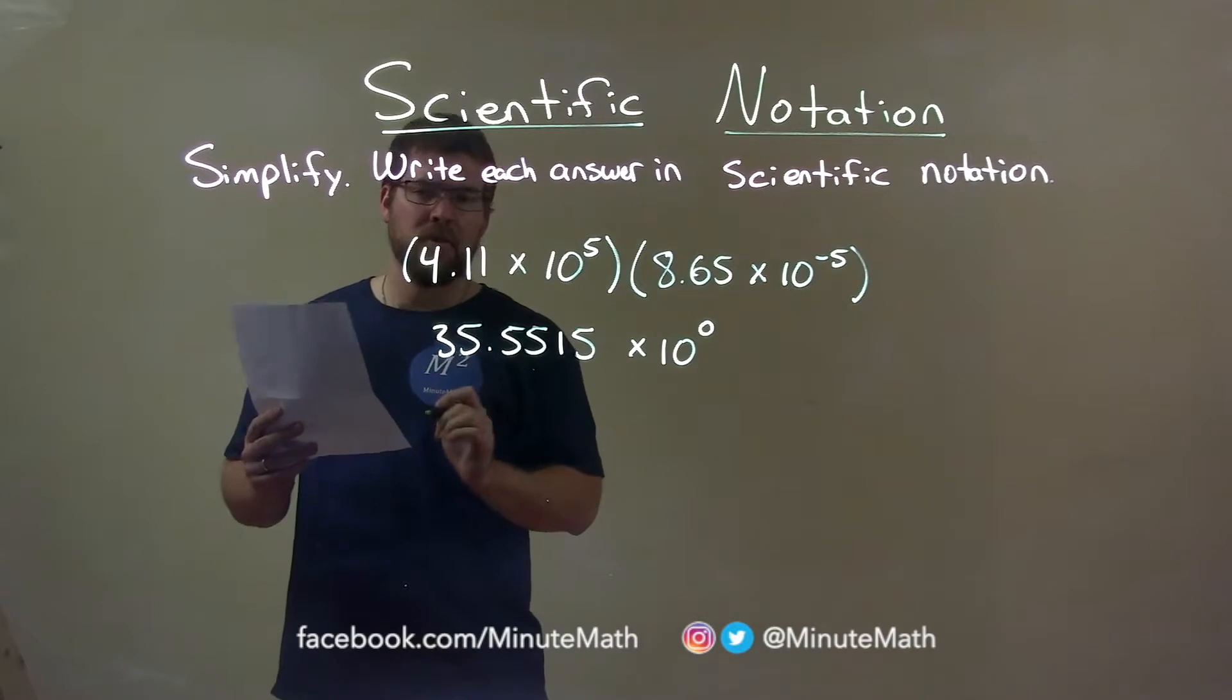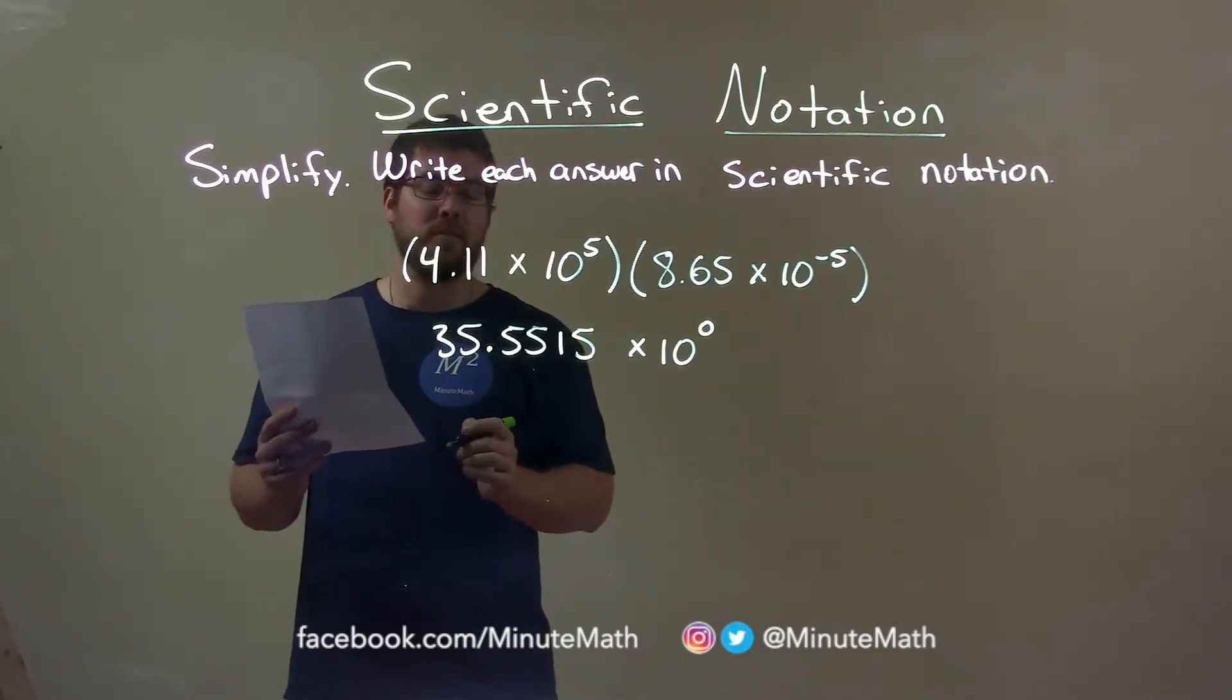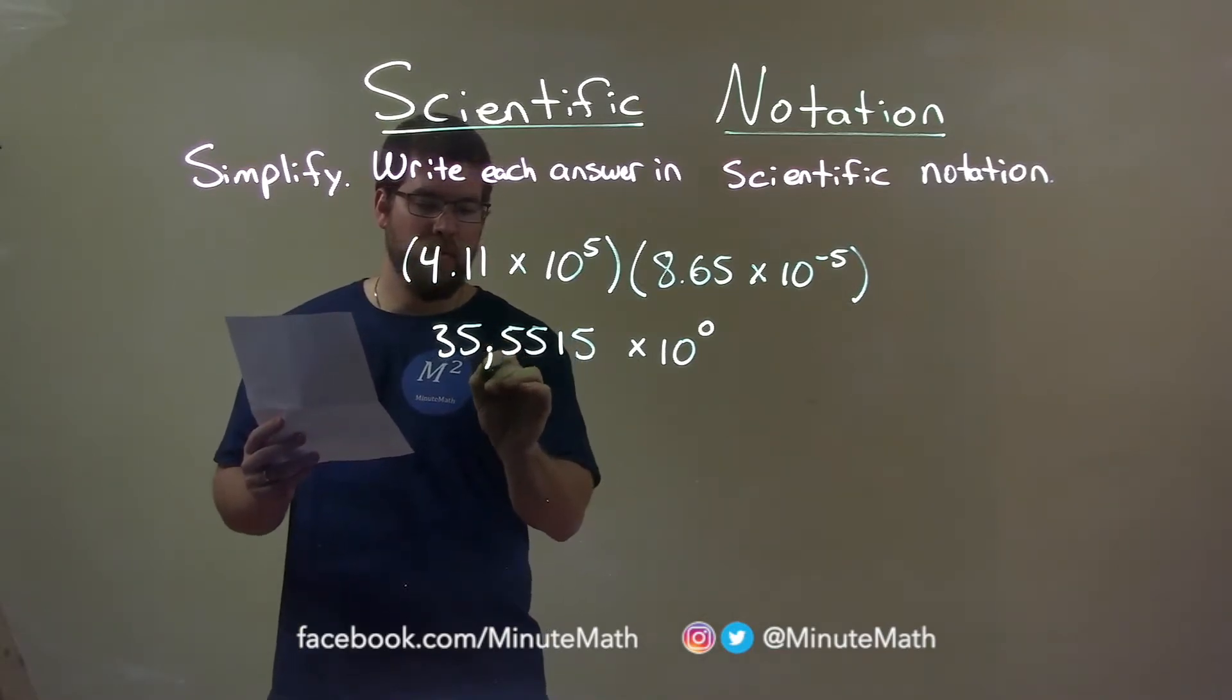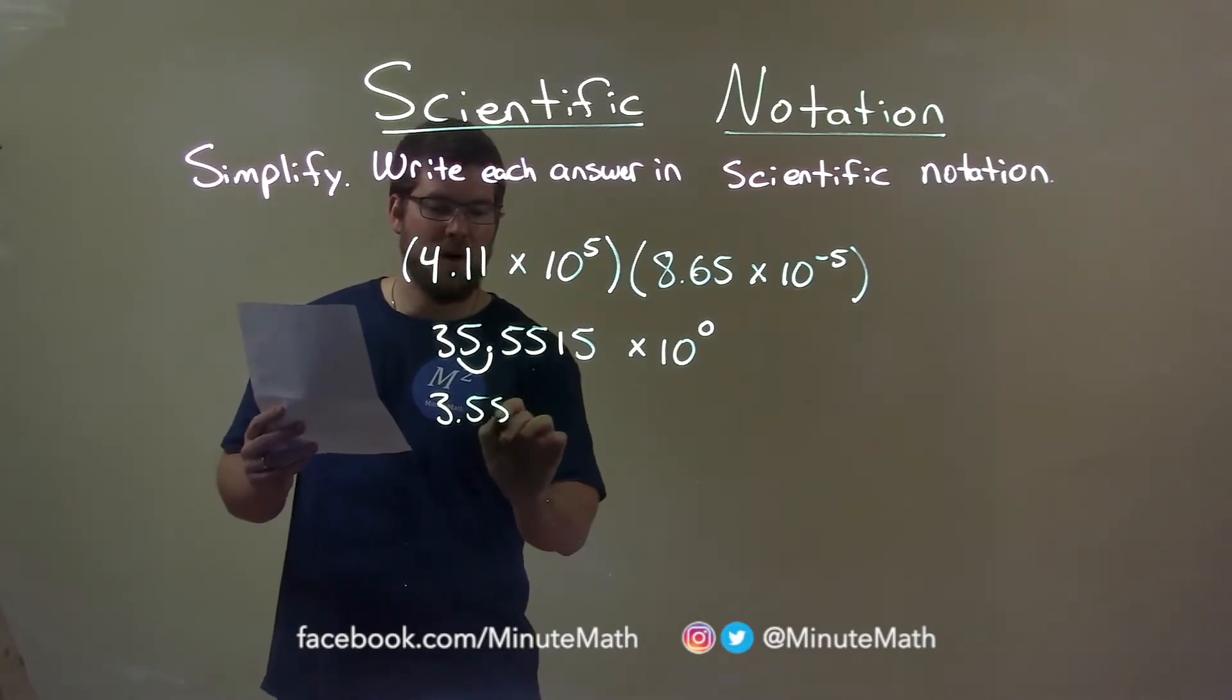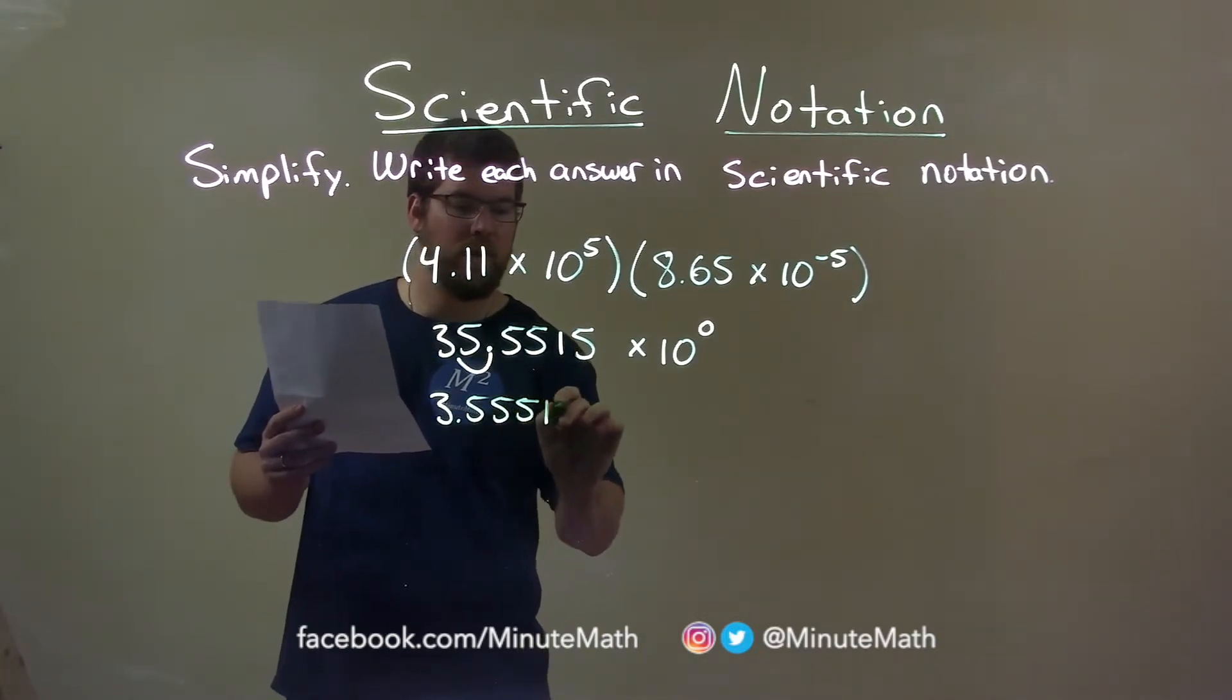Scientific notation also states that we need to have the first digit in the 1's position. So 3 should be in the 1's position. That means the decimal moves over one spot to the left, so we have 3.55515.